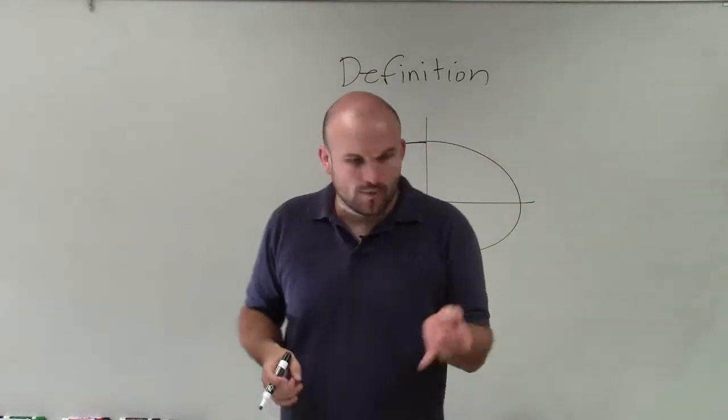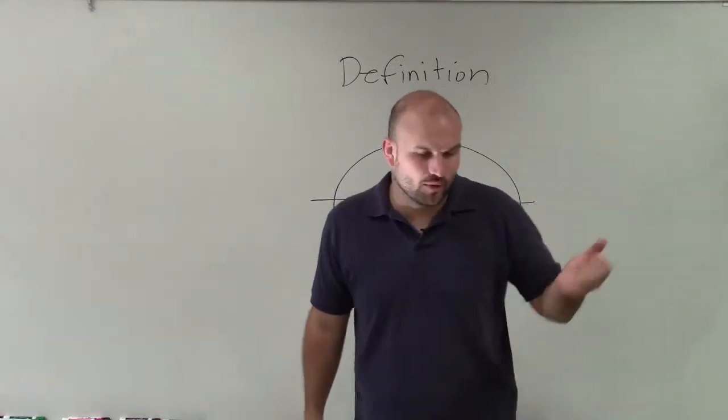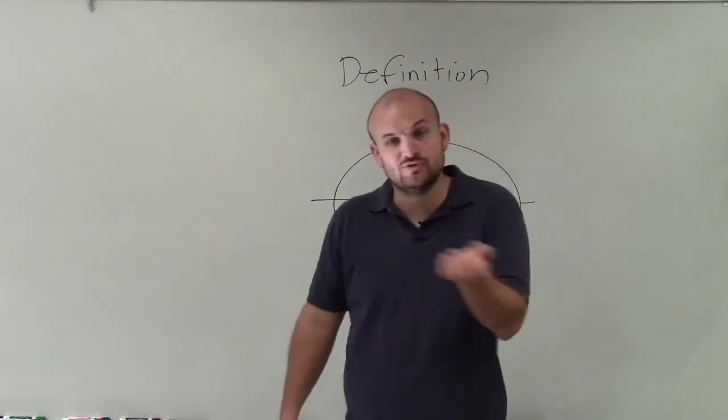Now again, just like when we look at a circle, right, the definition of a circle was an infinite set of points that are equidistant to the center.